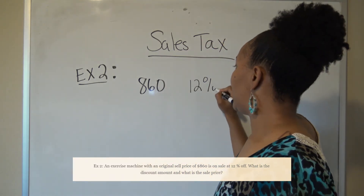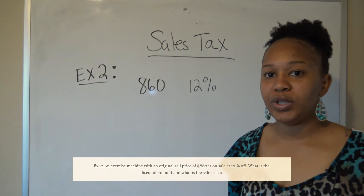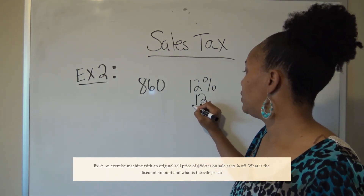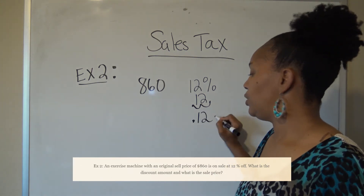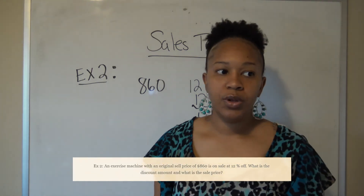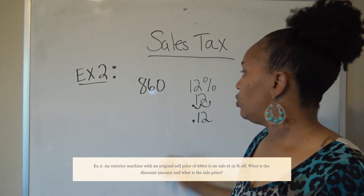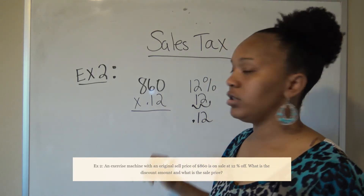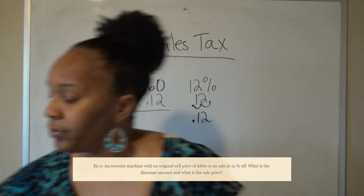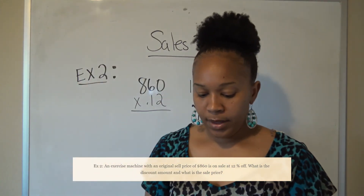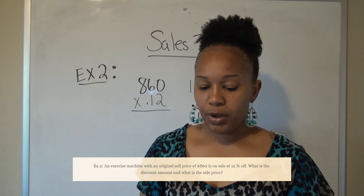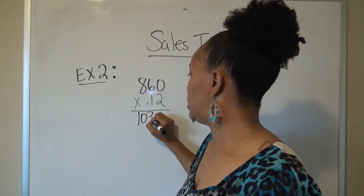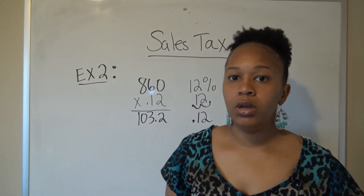Remember, anytime it's a percent we have to convert it to a decimal. 12% — move the decimal two places to the left — is equivalent to 0.12. To calculate the discounted amount, multiply 860 by 0.12, which gives you $103.20. So the discount amount is $103.20.